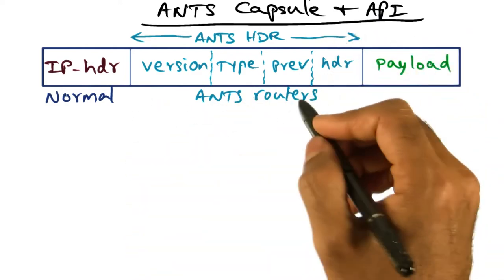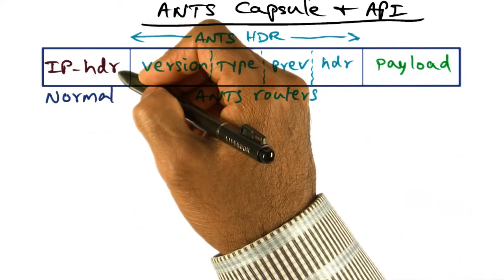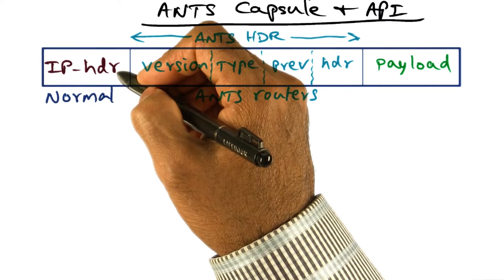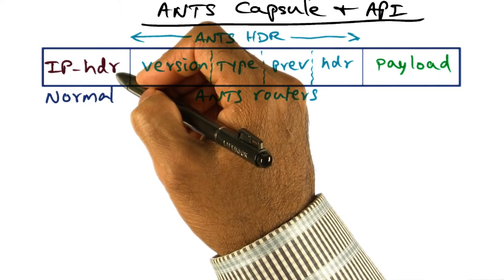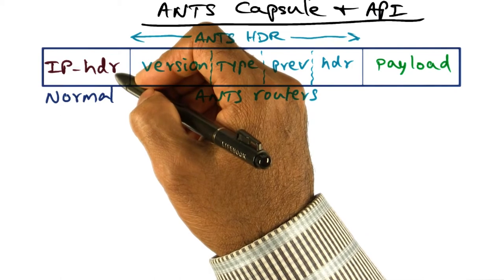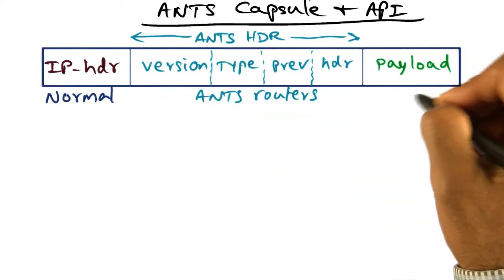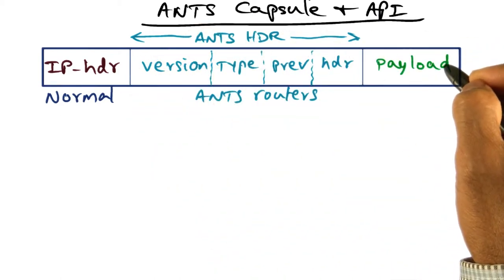First of all, the header as I told you consists of three parts. The original IP header, which is important for routing the packet towards the destination if a node is a normal node, not an active node. And this is of course the payload that was generated by the application.